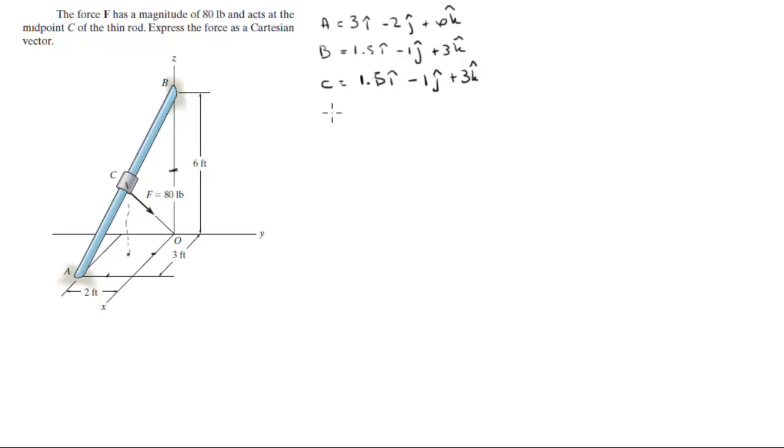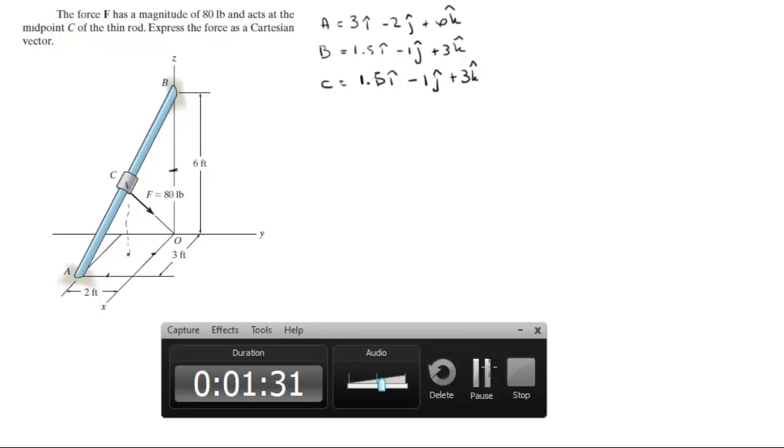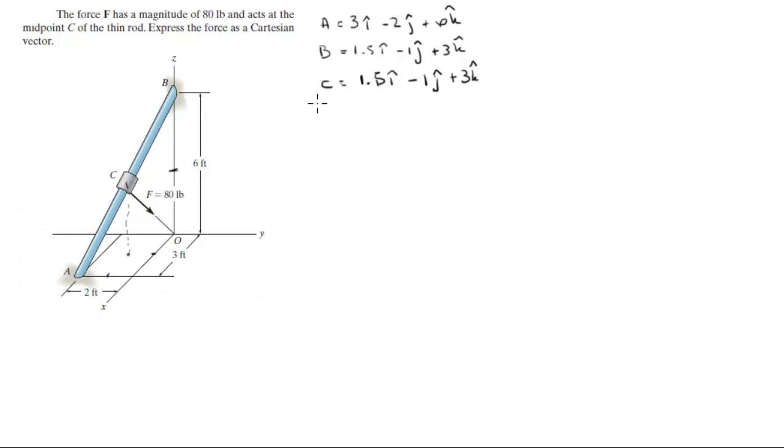So now that you have the three position vectors, we're going to find the vector C to the point O. And you know O is the origin, so basically this is going to be the opposite of vector C.